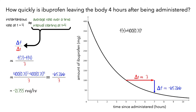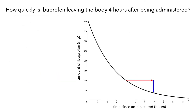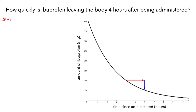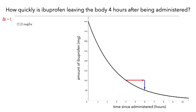However, we can make this approximation more precise by making the interval of time smaller. Let's begin by making delta t smaller — say delta t is 2. We can again calculate the average rate of change by dividing the change in f by the change in t. So when delta t is 2 hours, the average rate was –25.20 mg per hour.